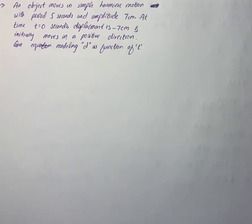We know that at t equals 0 seconds, if displacement is minus 7 cm and moving in a positive direction, the object is at the lowest point. So we take the negative cosine function.